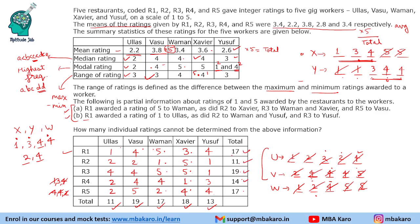So this is what we needed to do. The data was given in two formats and it might have appeared difficult, but it wasn't because small numbers were involved — it was just about knowing the meanings of mean, median, mode, and range, and plotting a table. How many individual ratings cannot be determined from the above information? We can determine all information, so the answer is 0.